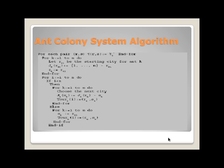It also considers an ant positioned on node r chooses the city s to move where random number is uniformly distributed and random variable s is selected according to the probability distribution.